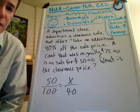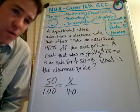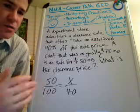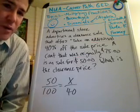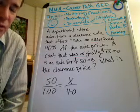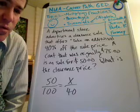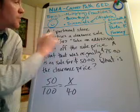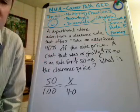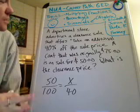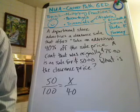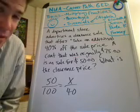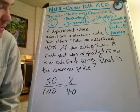Let's look at a quick problem that Fermi mentioned to me this morning when he walked in. This is probably the problem he was looking at from the released GED questions. It says: a department store advertises a clearance sale that offers an additional 40% off the sales price of a coat that was originally $75, now on sale for $50. What is the clearance price?